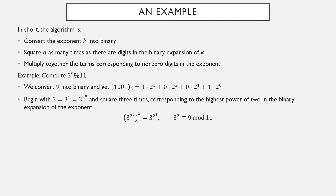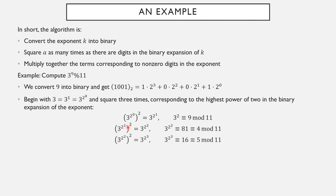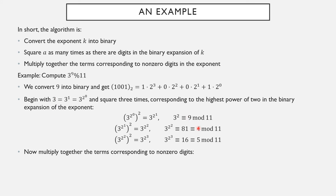So I square once. My original value was 3, so I get 3 squared, that's 9. Now I don't multiply by 3, I square. If I square 9, I get 81. Mod 11, that's 4. So that corresponds to 3 to the 2 to the 2nd. Now I have 4, corresponding to the digit 0. I square again. 3 to the 2 to the 2nd squared is 3 to the 2 cubed, but 3 to the 2 to the 2nd was 4. So when I square 4, I get 16. But mod 11, that's 5. That now corresponds to this digit. Since I've done 3 squarings, I've gotten up to 2 cubed, and I'm done. What I do now is, for my terms 3, 9, 4, and 5, multiply together the ones that correspond to non-zero digits.